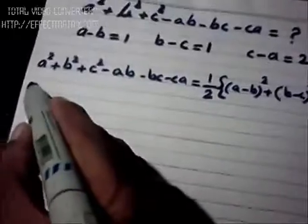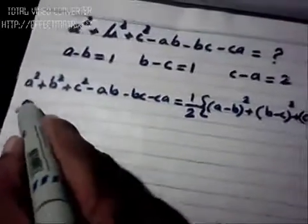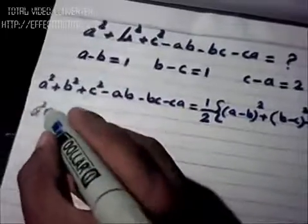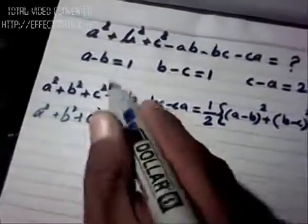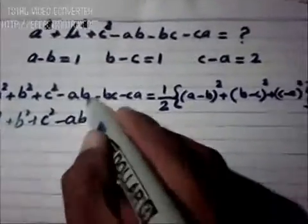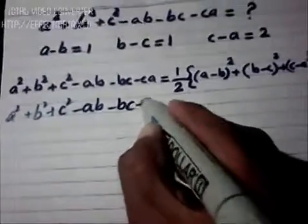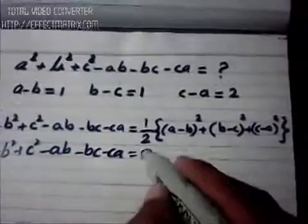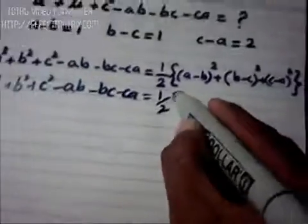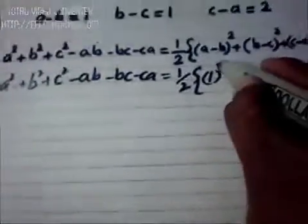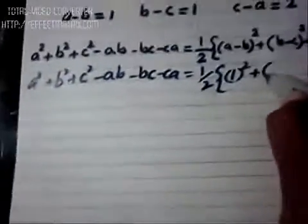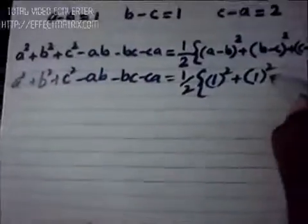Now let's put the values. a² + b² + c² - ab - bc - ca = ½[...]. The value of a - b is 1, and the value of b - c is 1, so when squared these become 1.